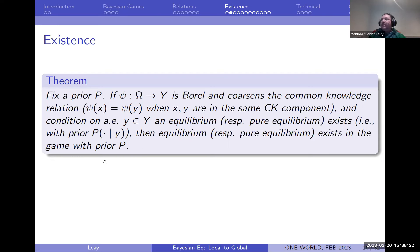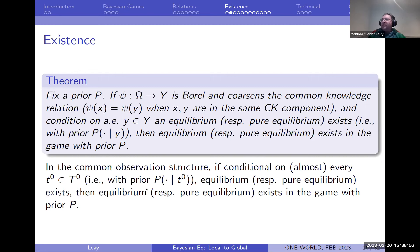To state the general result: you have a prior over the state of the world, and some Borel function psi to another space that courses the common knowledge relation, and this psi is smooth. You assume that on almost every point in the image of psi, the game conditional on psi giving that value has an equilibrium. Then I claim you can piece together those equilibria onto an equilibrium of the entire space. Similarly for pure equilibria. In the benchmark case, smoothness is automatic — you just need equilibrium on almost every public signal.